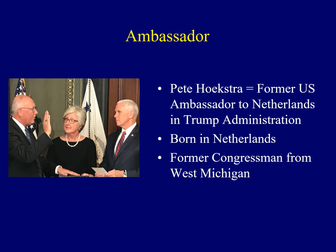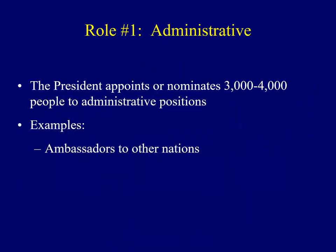Ambassadors serve as the eyes and ears for the president in different countries and even serve as a spokesperson for the administration in those areas. The image here shows Pete Hoekstra, the former U.S. Ambassador to the Netherlands under President Trump. He was actually born in the Netherlands, migrated to the United States as a boy, and eventually was elected to the U.S. Congress from West Michigan. So he was born in the Netherlands and eventually became the U.S. Ambassador to the Netherlands — go figure.